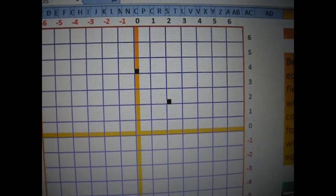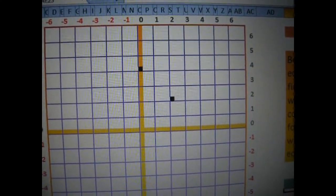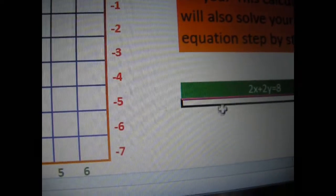Then over 2 positive for the x axis, 1, 2. Of course, then you go ahead and draw your line to connect those dots. And we'll do one more.